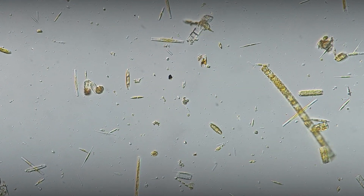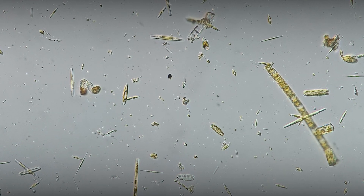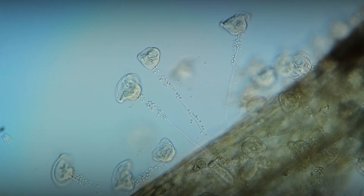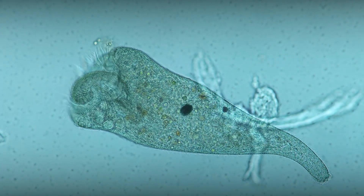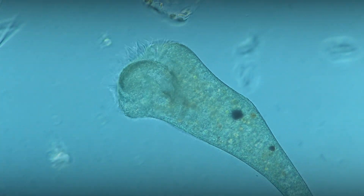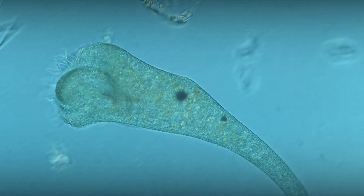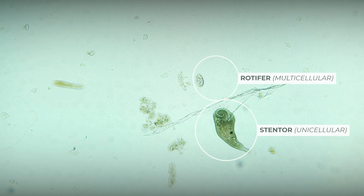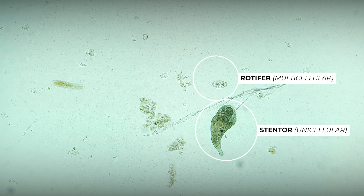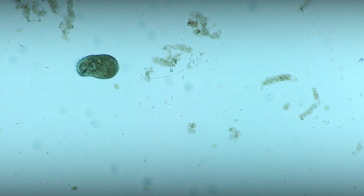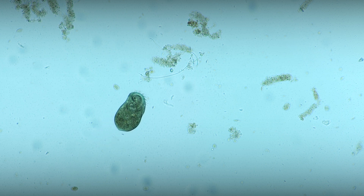When we think of microscopic organisms, we usually imagine tiny creatures that are invisible to the naked eye. However, not all microbes are so small. Some of them can reach impressive sizes, such as the Stentor, a genus of filter-feeding ciliates that can grow up to two millimeters long. That may not sound like much, but it is larger than some of the smallest multicellular animals, such as rotifers and tardigrades.